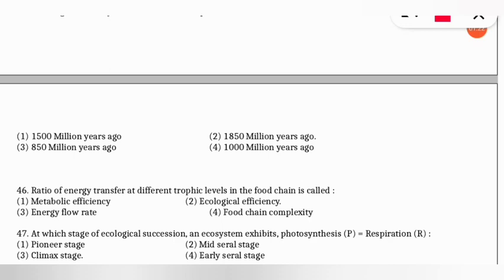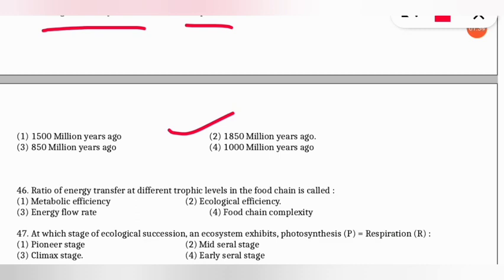The next question: the origin of eukaryotic cells on Earth took place how many million years ago? The correct option is option 2 — eukaryotic cells originated on Earth approximately 1,850 million years ago.